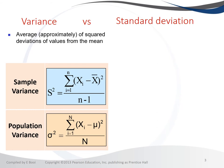For the population variance, we use the Greek letter sigma. Sigma-squared equals the sum of your observations minus the population mean, squared, divided by n. The only difference between sample and population variance is the denominator: for the sample we use n minus one, and for the population we use n.